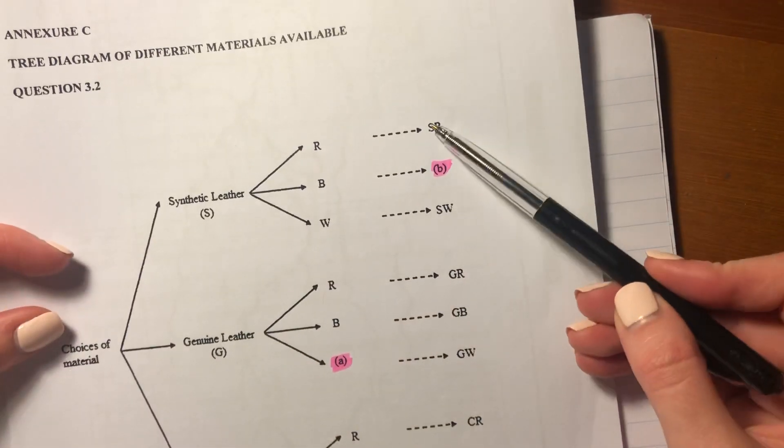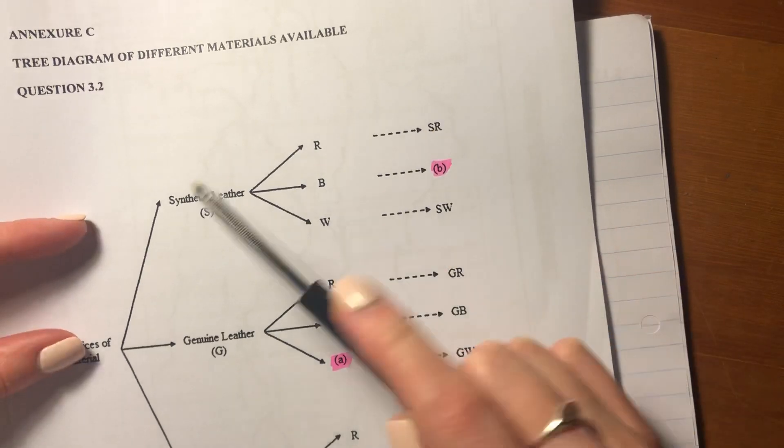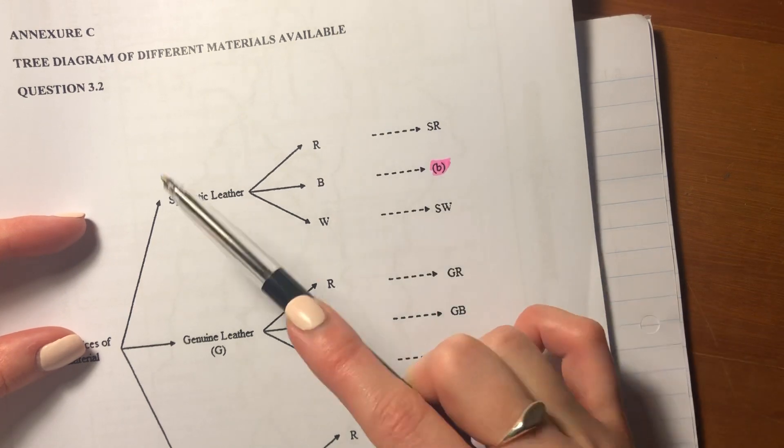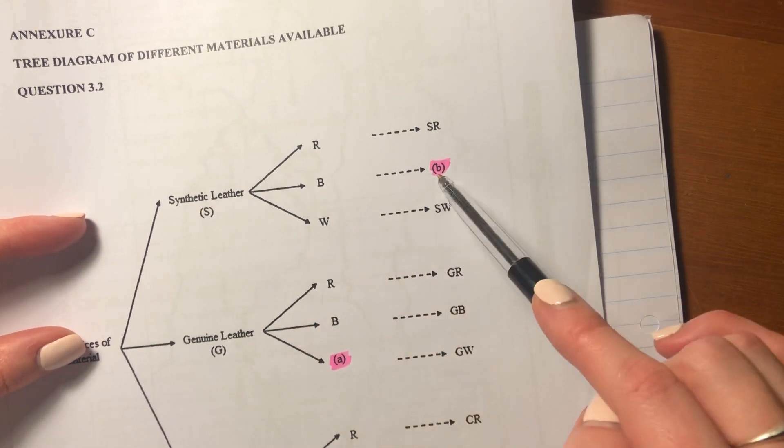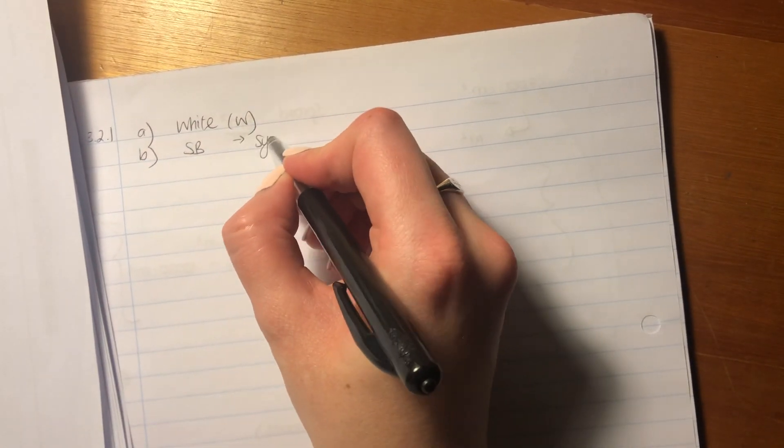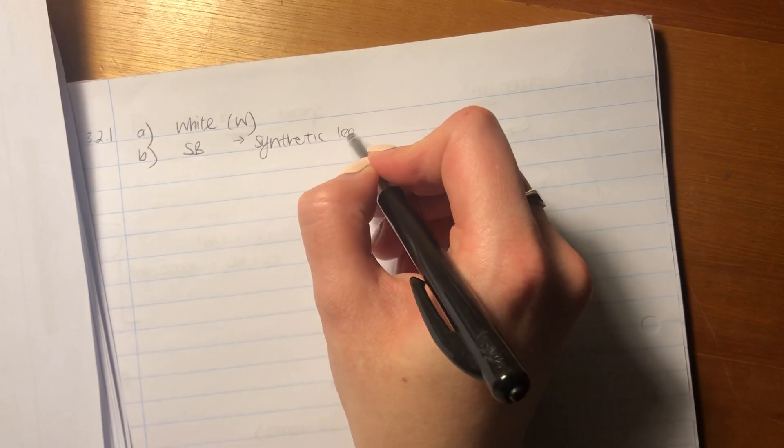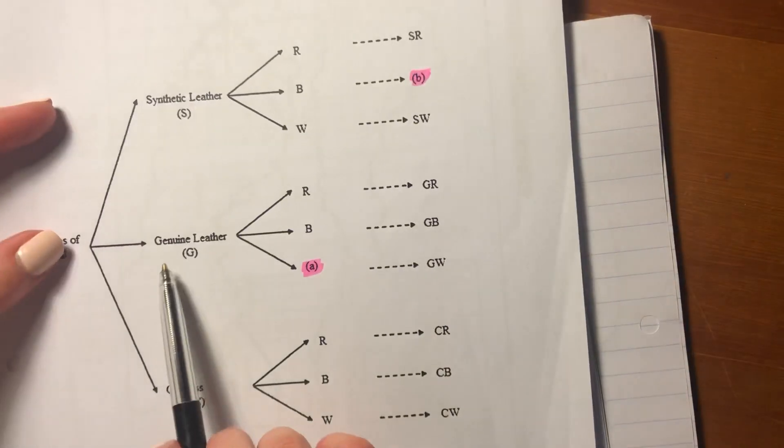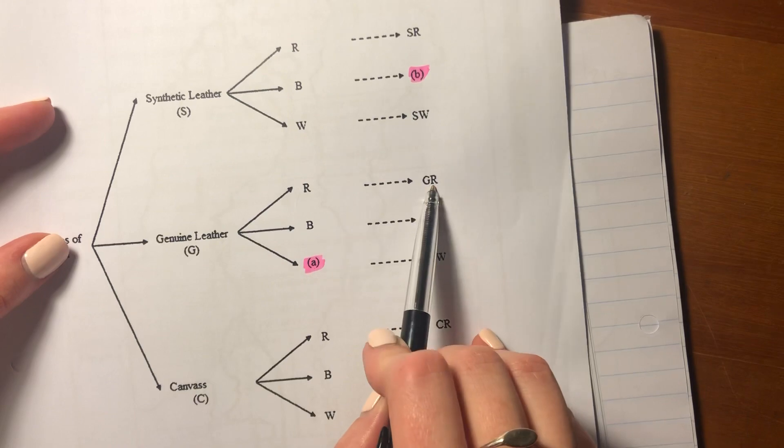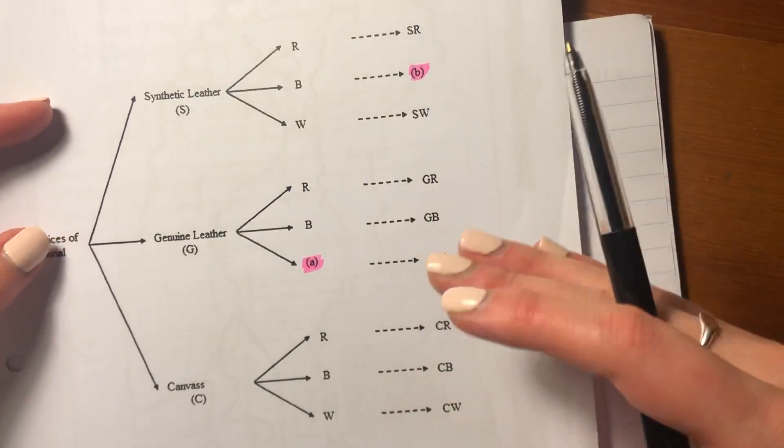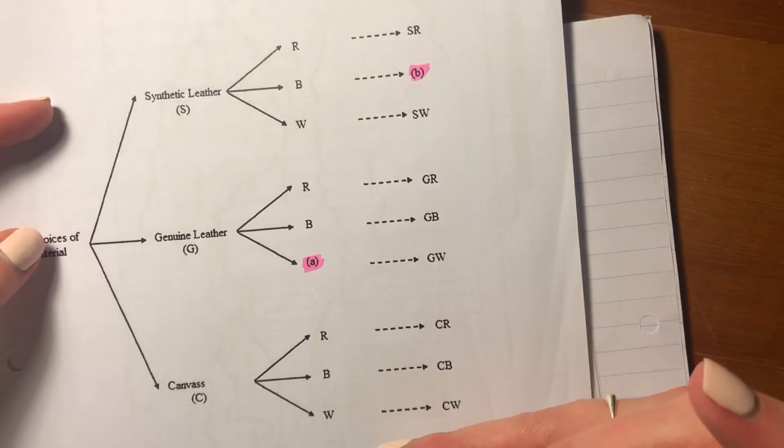And then B over here, you can see with each of the options, they put the material represented by the first letter, and then the second letter represents the color. So SR means synthetic leather in red. So this B over here should be synthetic leather in blue. So it's going to be SB, which is synthetic leather in blue. This is genuine leather in red, so we have GR. You can have it in blue, you can have it in white. Make sure that you understand what this is actually saying. It's giving you an indication of the different options available to them.